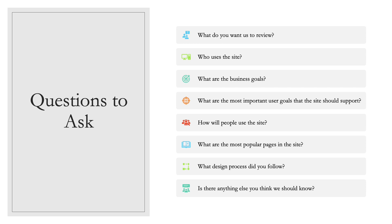The second step for conducting a heuristic evaluation is asking some questions. First you want to ask: what do you want us to review? This is really important when you're reviewing a website for a company, especially if you work at a place where you do usability tests for different companies, because you may not know everything about the company. They may not want you to review their main company site — they may want you to review an application that only their employees use. So that's a very important question to ask.